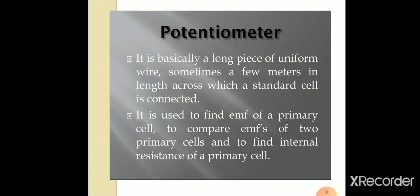Potentiometer is basically a long piece of uniform wire, sometimes a few meters in length across which a standard cell is connected. It is used to find the EMF of a primary cell, to compare the EMFs of two primary cells, and to find the internal resistance of a primary cell.